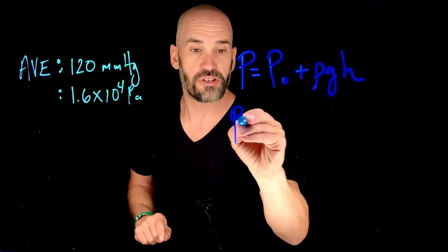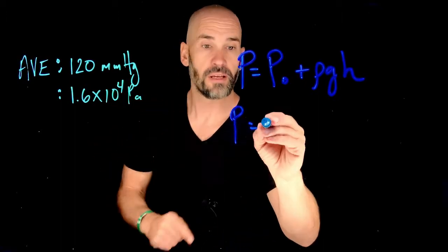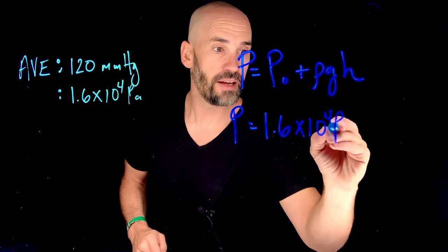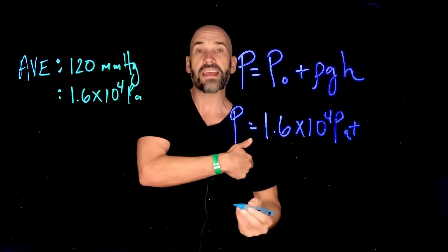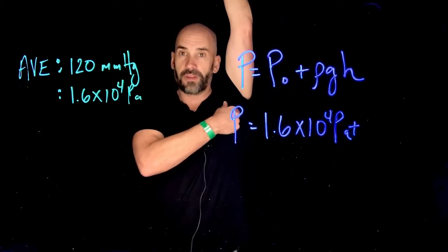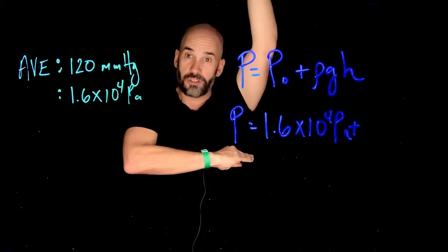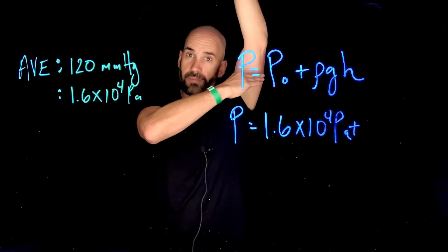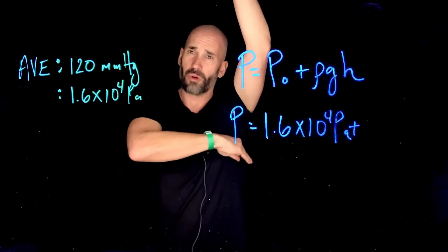All right. So our original pressure, our normal pressure that we would have if it's totally aligned, would simply be 1.6 times 10 to the 4 pascals. Now if we raise our arm and we take our blood pressure with our arms raised, we're basically increasing our H to this distance. Roughly, I would say probably like a quarter of a meter, so 25 centimeters.